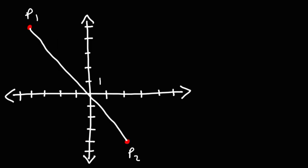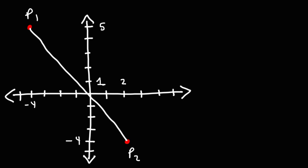Here's another example you can practice on. Feel free to pause the video. Calculate the gradient between points P1 and P2, where each tick mark represents one unit. P2 is located at an x value of 2 and a y value of negative 4. P1 is located at an x value of negative 4 and a y value of 5.